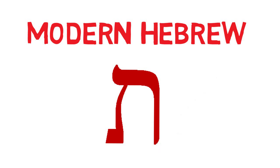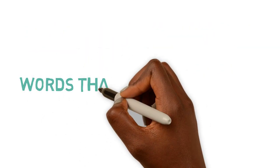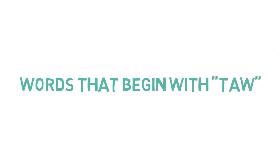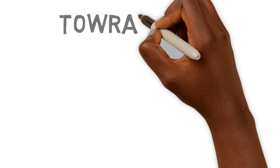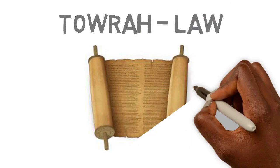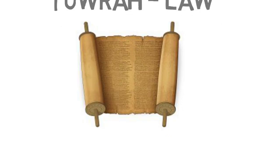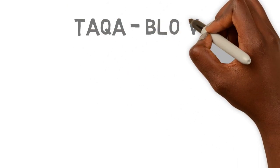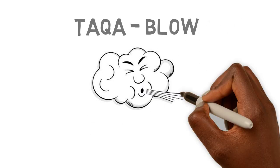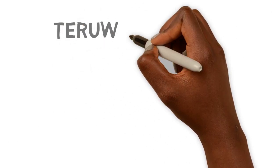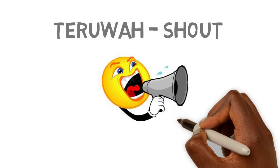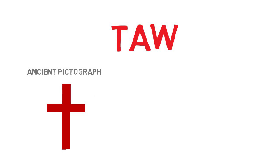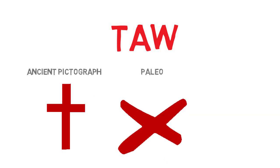Now let's take a look at some words that begin with Tau. This concludes our lesson today on the letter Tau. We went over the ancient pictograph, the Paleo, and the modern Hebrew.